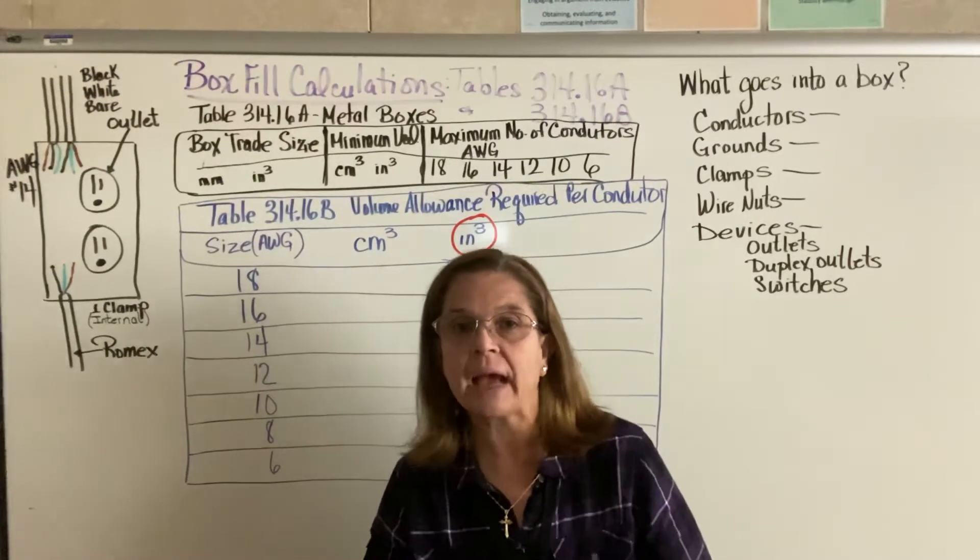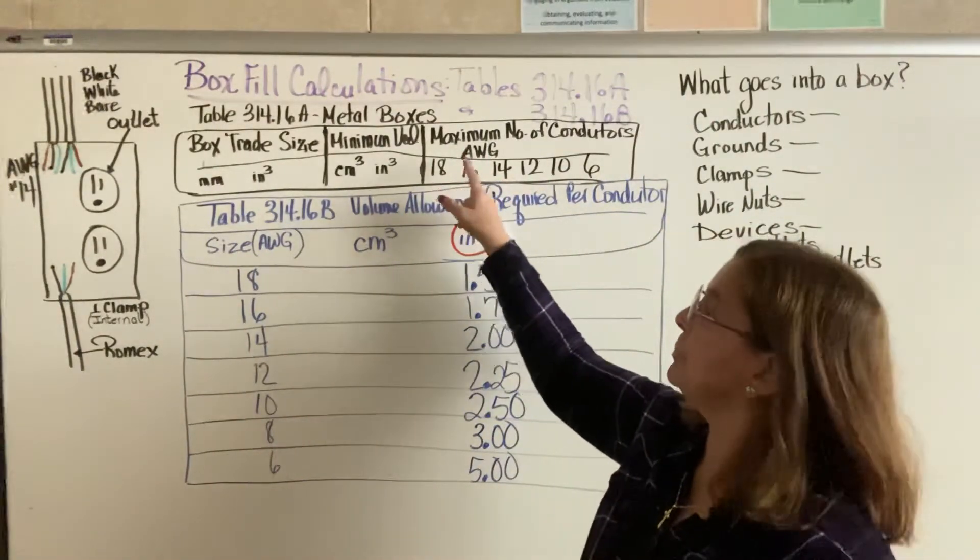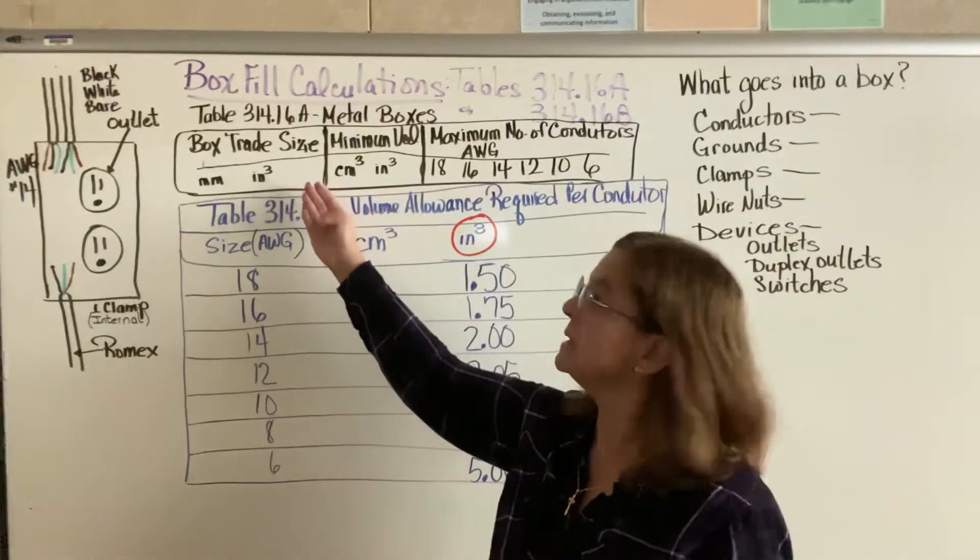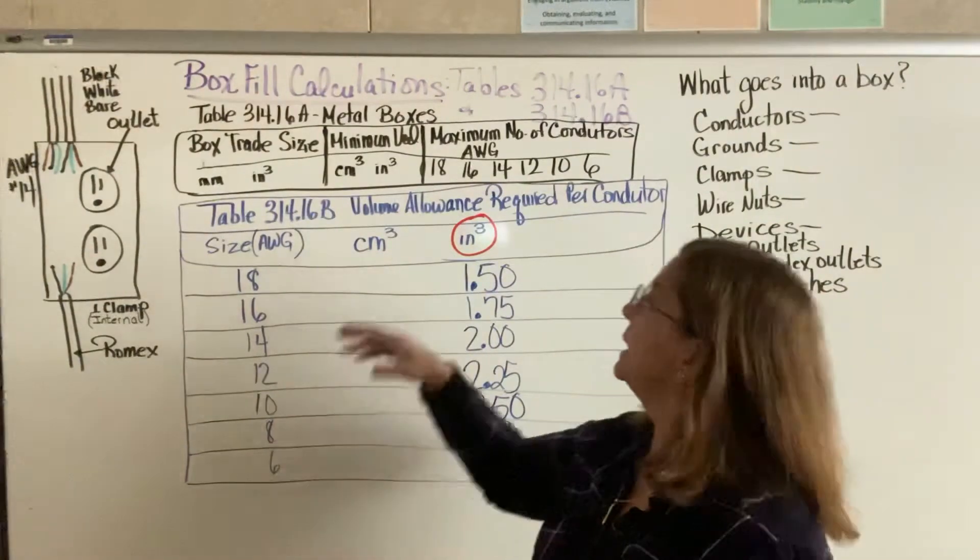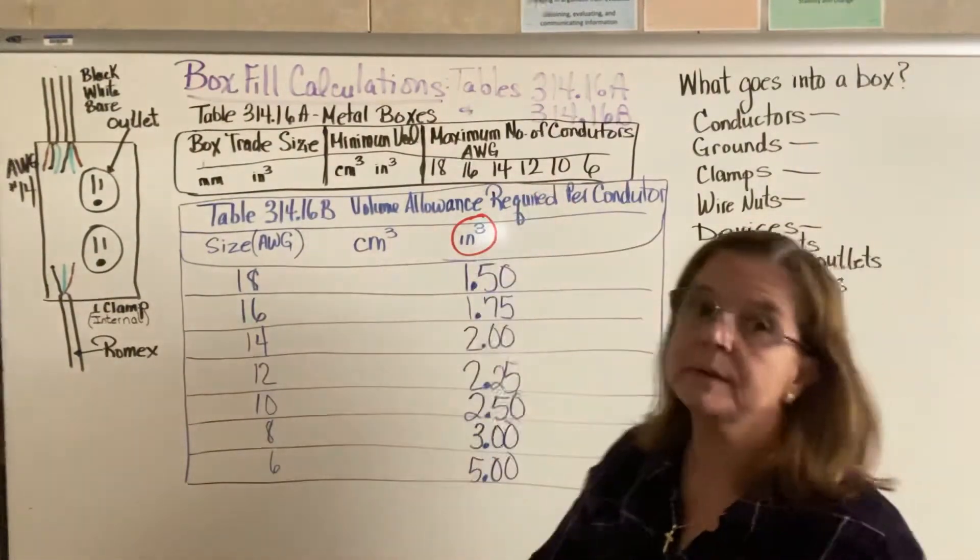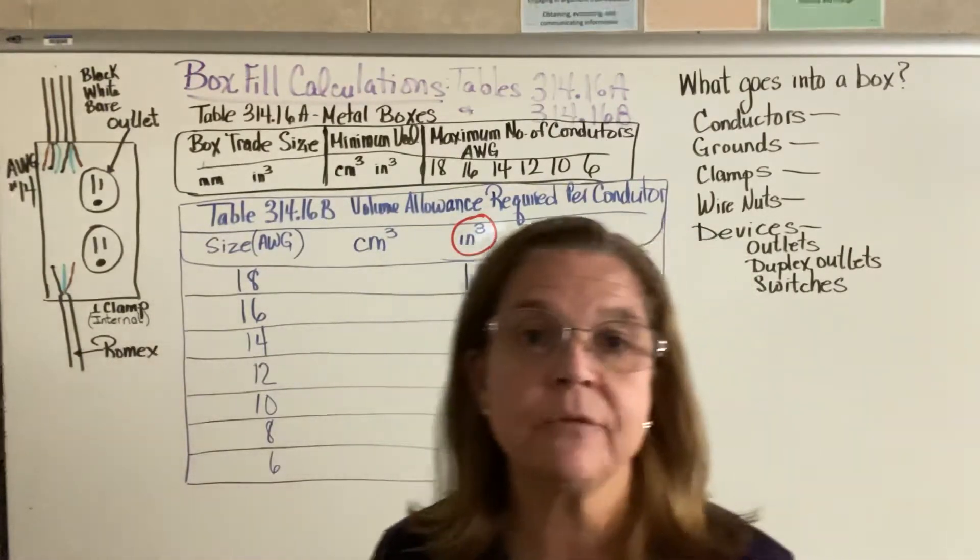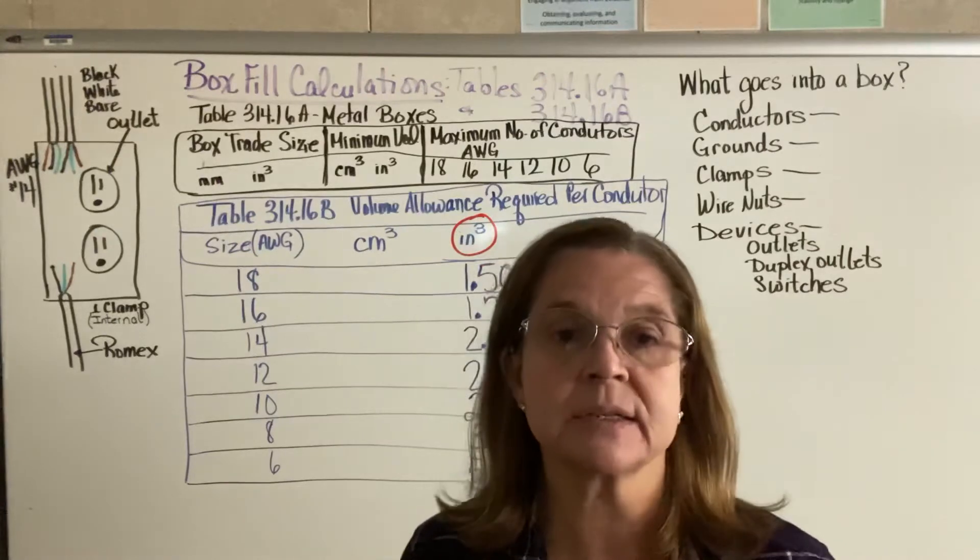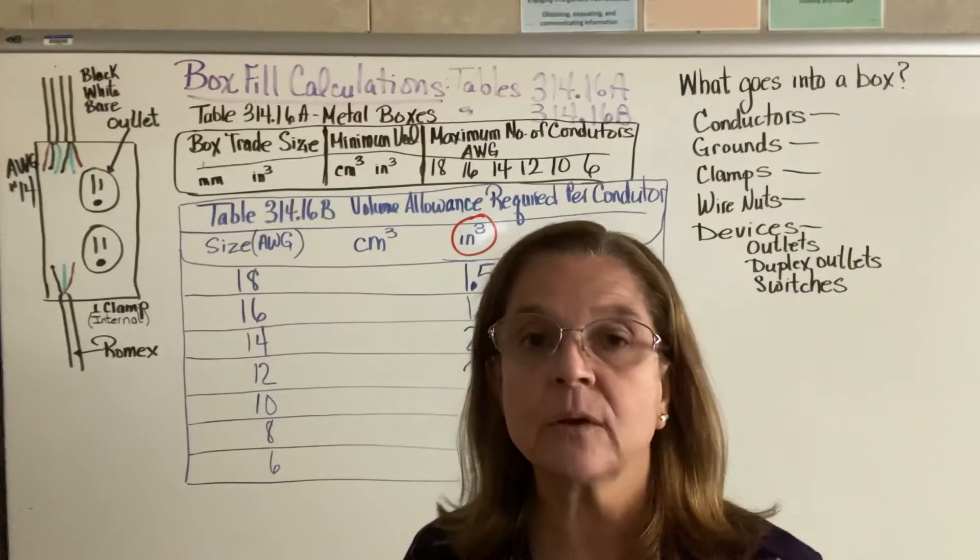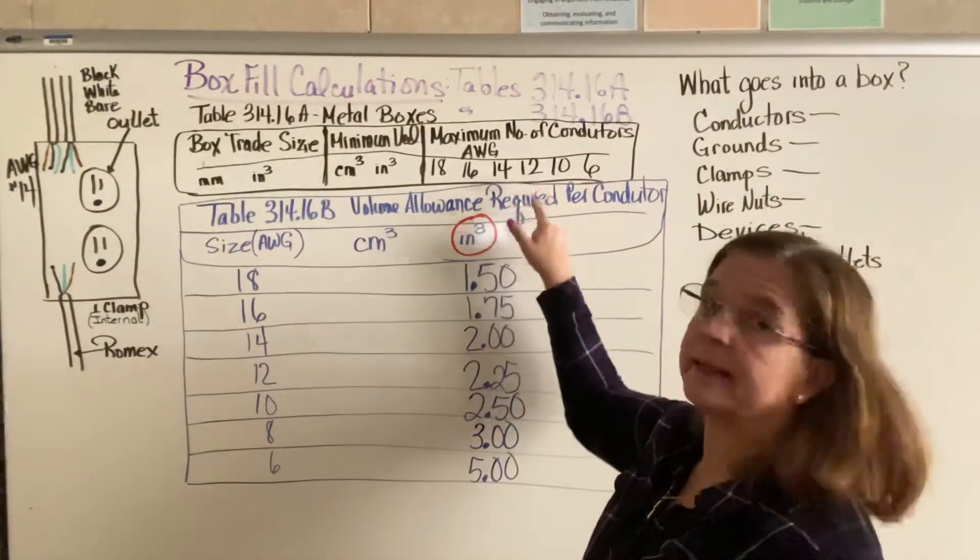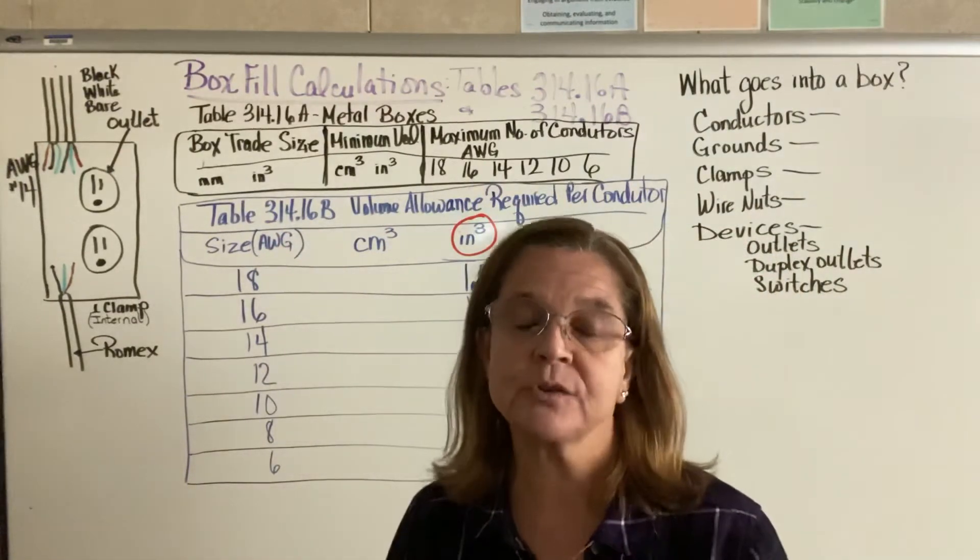I put the outline for 314.16A on top here. Basically, you'll see the box trade size, the minimum volume allowed, and the maximum number of conductors. You would use that if you're using all number 12 conductors. You're using four number 12 conductors, you would go down, find number 12, find the number four, and then read to the left to see what size box you need.